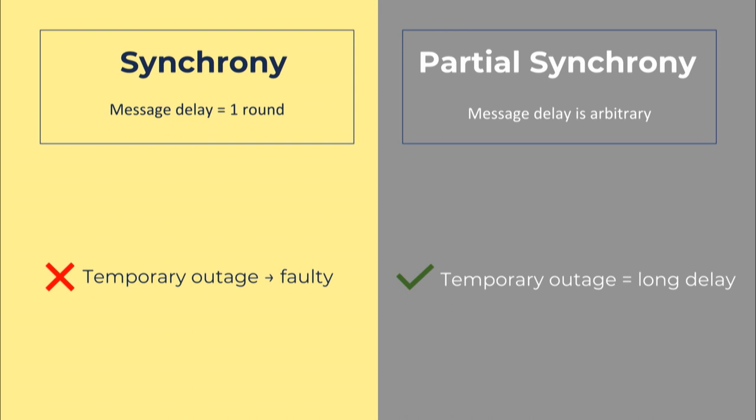In our example Coinbase had a short-term outage, meaning it violated the network assumption. In the classical synchronous model the node is treated as faulty from that moment on, and a classical synchronous consensus protocol is not obligated to provide any security guarantee for faulty nodes. So Coinbase is inconsistent, but it doesn't violate the proof — that's the paradox. At this moment you are going to say: Elaine, you're not seeing anything new here, this is exactly why we have the partially synchronous model. In the partially synchronous model message delay is arbitrary and the protocol needs to guarantee consistency no matter how long the network delay is.